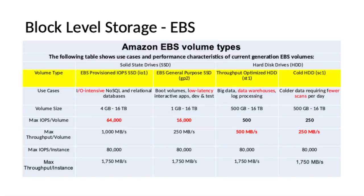Let's talk about block-level storage EBS. You can expect a few questions from this section. The key idea to remember is the difference between all of the EBS volume types. There are four types of Amazon EBS volumes: EBS Provisioned IOPS SSD, EBS General Purpose SSD, Throughput Optimized HDD, and Cold HDD. Please try to remember the short code for each volume type — for example, EBS Provisioned IOPS SSD is IO1, and Throughput Optimized HDD is ST1.